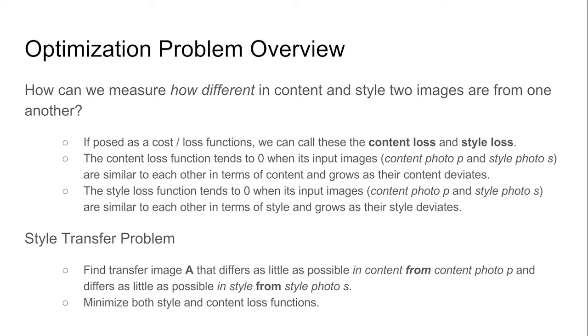First, let's tackle what it means for this to be an optimization problem. Let us ask the question, how can we measure how different in content and style two images are from one another? If we pose this as loss functions, we can call these the content loss and the style loss. The content loss function tends to zero when its input images, photo P and style photo S, are similar to each other in terms of content and grows as their content deviates.